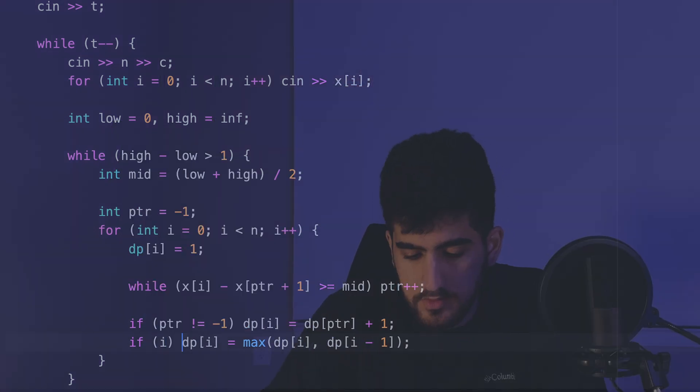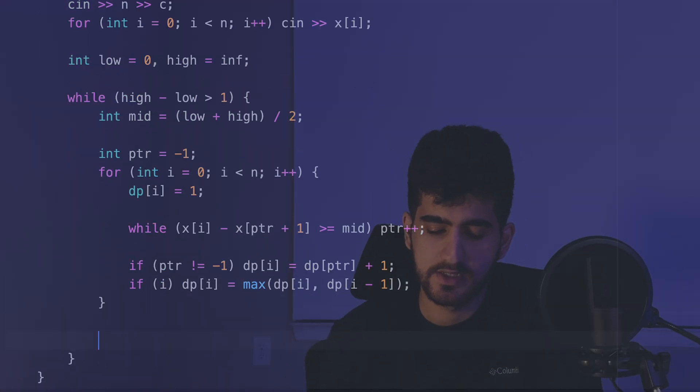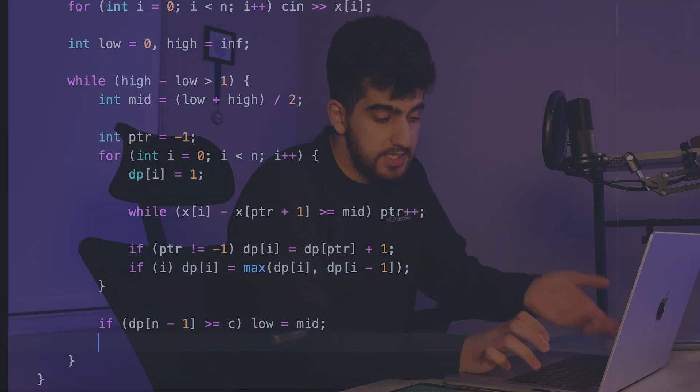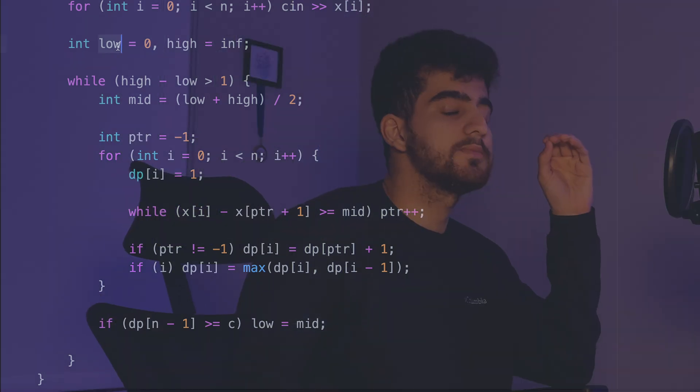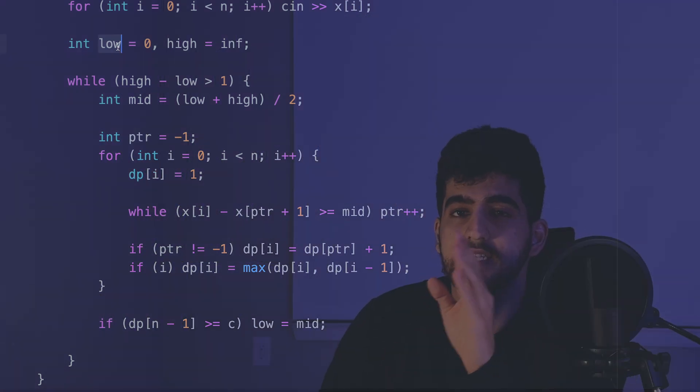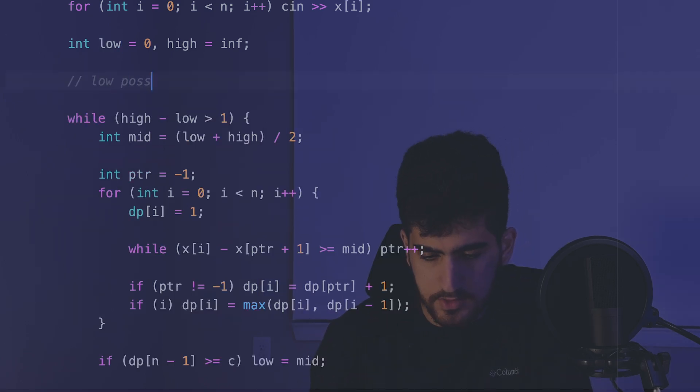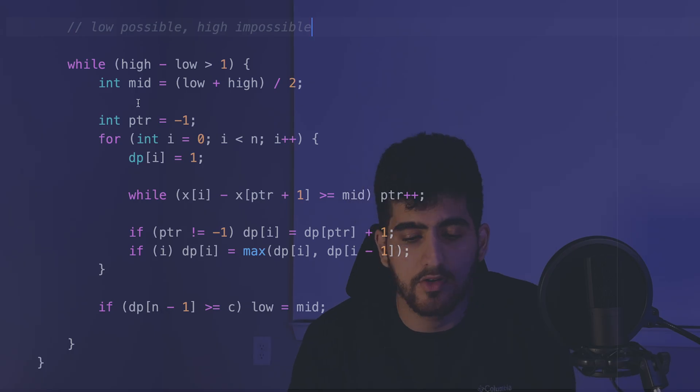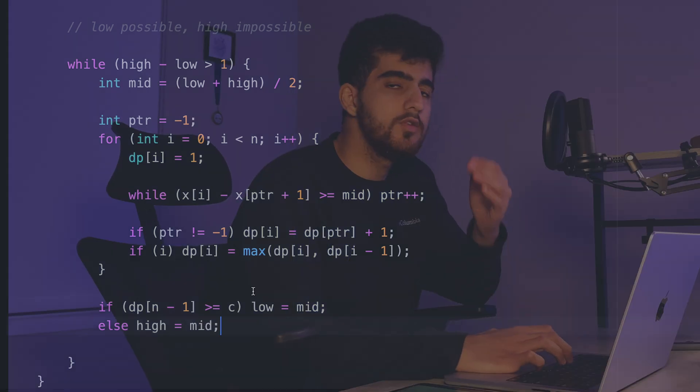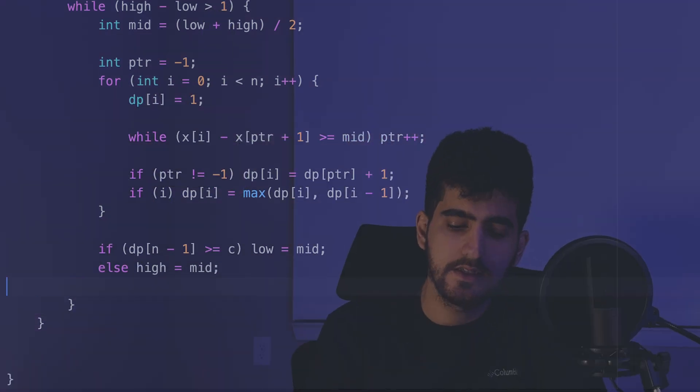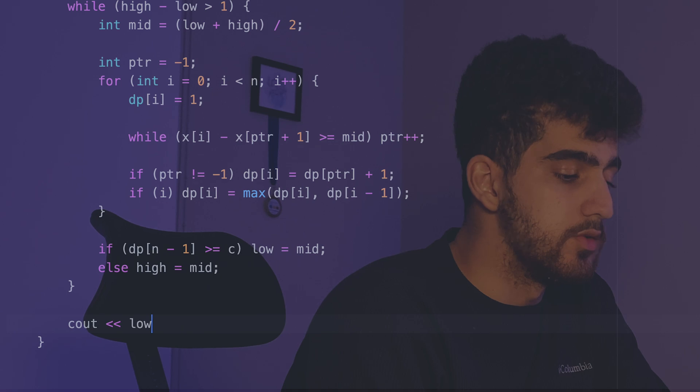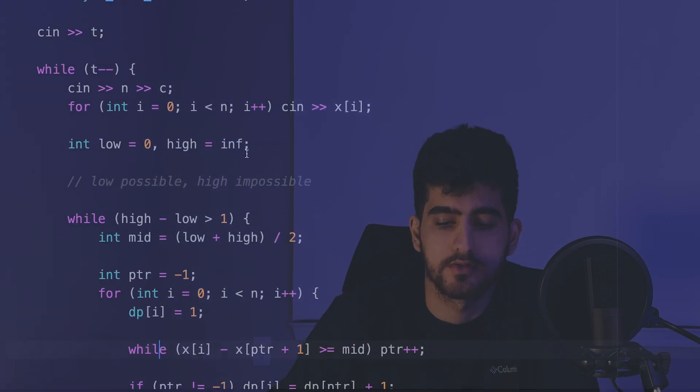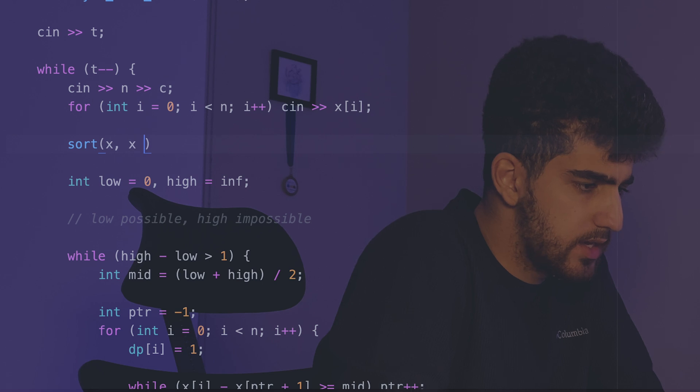At the end I can simply say that if dp of n minus 1 was greater than or equal to c, low equal to mid, it is possible. Do not forget that the low is something that is always possible, and high is the first thing that is not possible at all. Low is possible, high is impossible. This value of mid is possible, so we set low equal to mid, and else we set high equal to mid. So low is the maximum number which is possible, so I just need to see out low at the end. Our release is not in the sorted order, so we should also sort them x, x plus n.